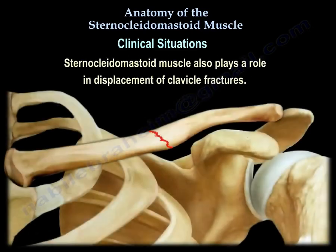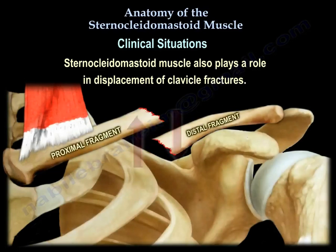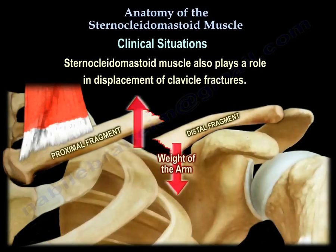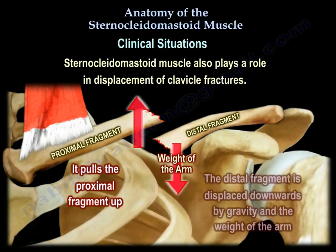The sternocleidomastoid muscle also plays a role in displacement of fractured clavicle, as you can see here. It pulls the proximal fragment up, while the distal fragment is displaced downwards by gravity and the weight of the arm.